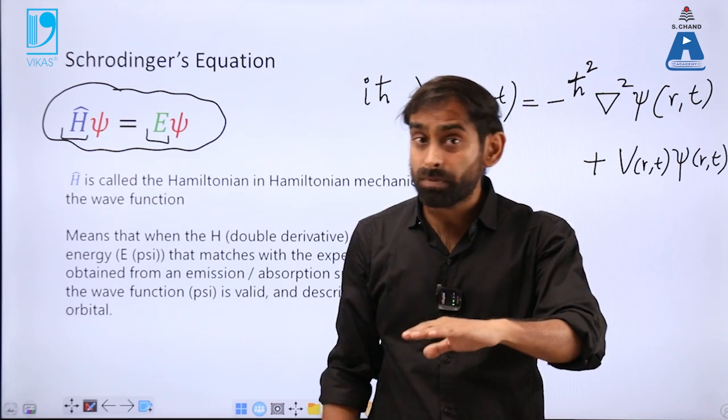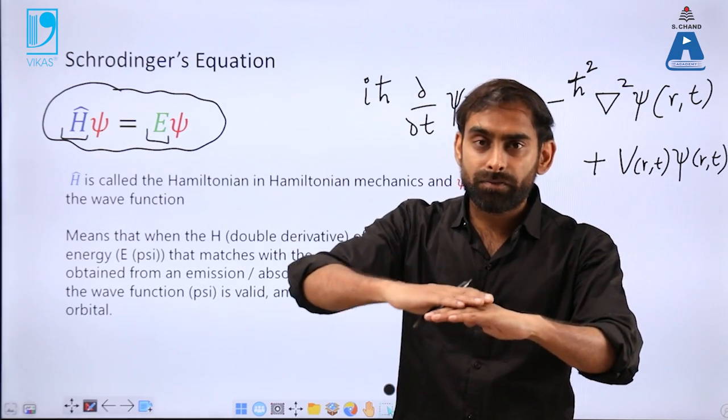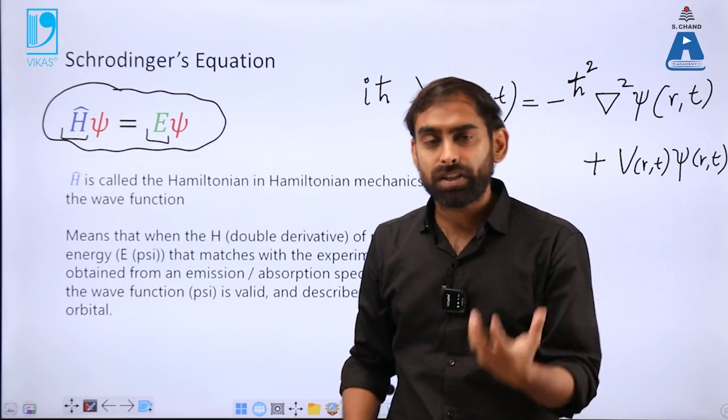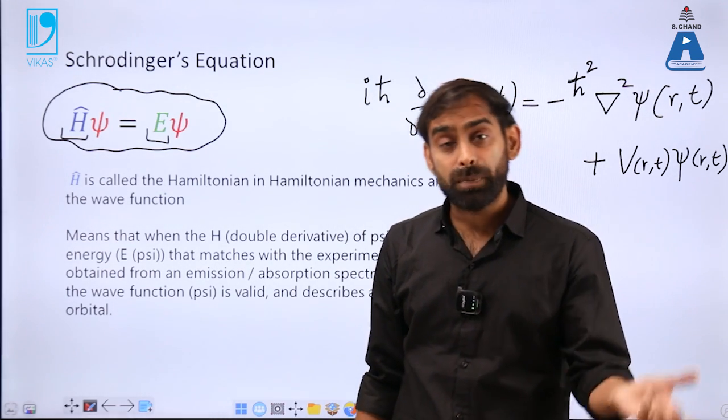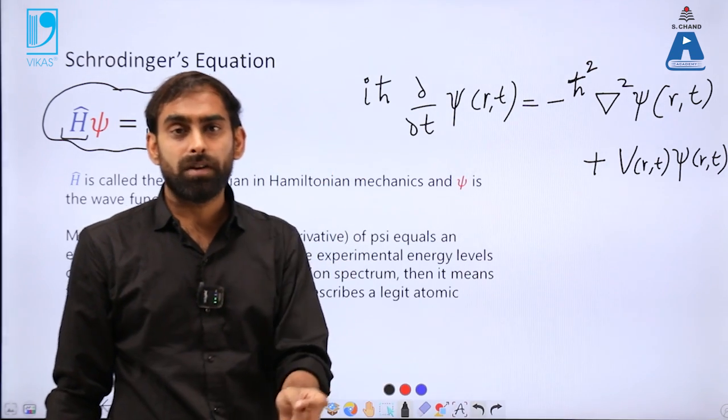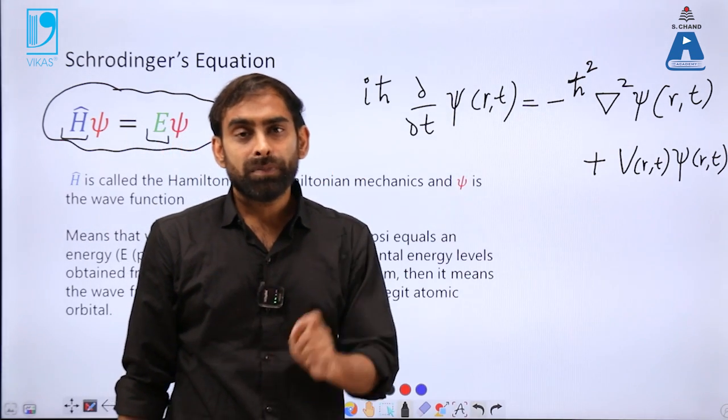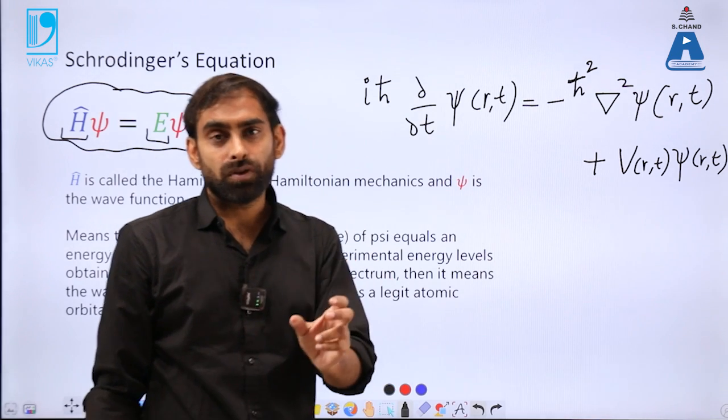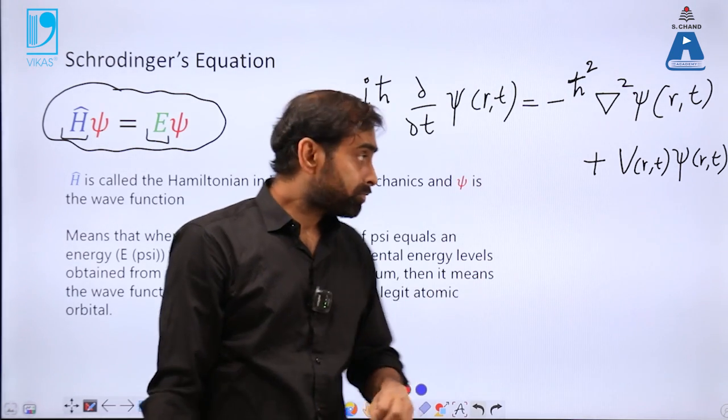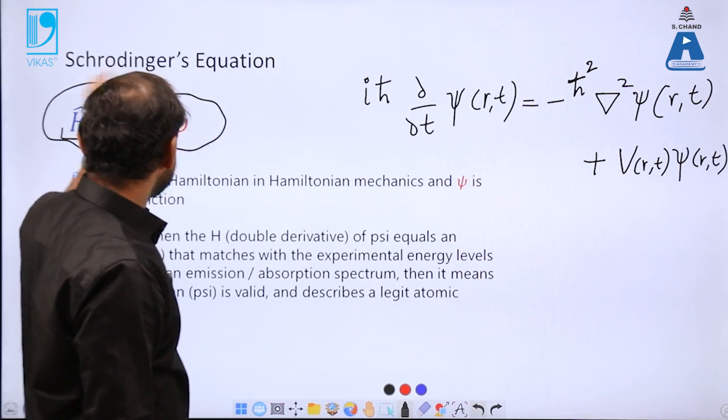He noticed that energy levels in the hydrogen atom are quantized. That means electrons cannot be present anywhere, but will be present at a specific distance from the nucleus. That gave the idea of orbits—orbits have specific energy, and that energy can be calculated by observing the specific wavelength coming out from the spectrum.